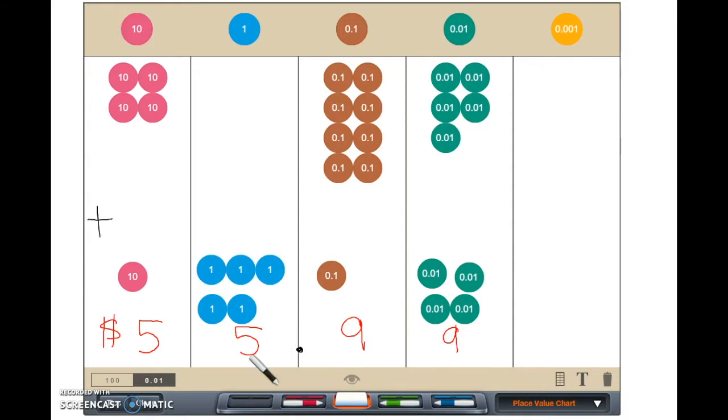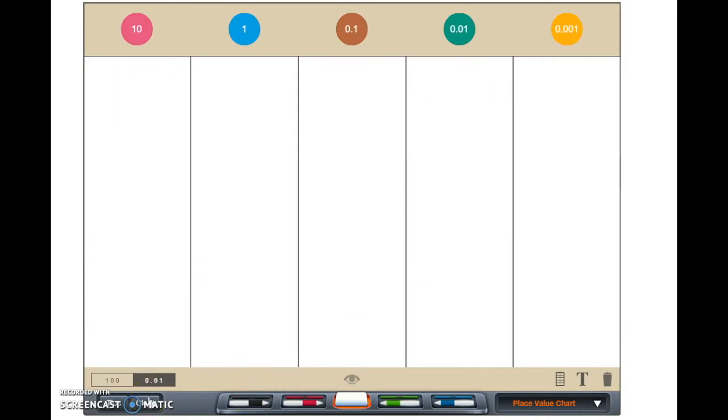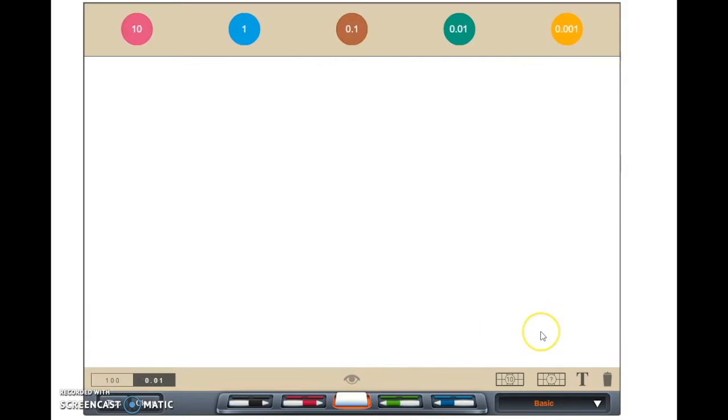Now we are going to solve the problem using pictorial models. I am going to start by drawing a place value chart that includes tens, ones, tenths, and hundredths.